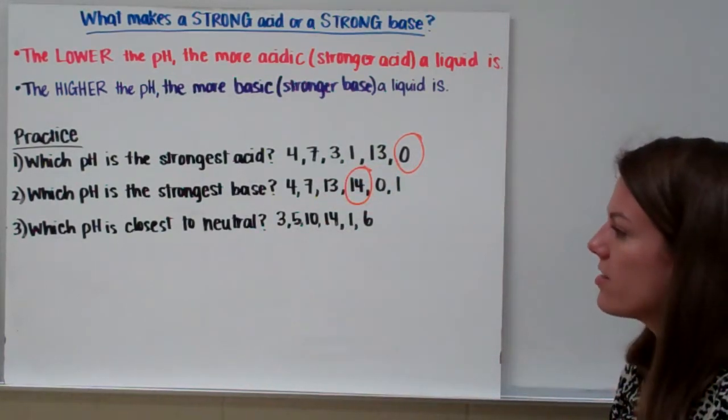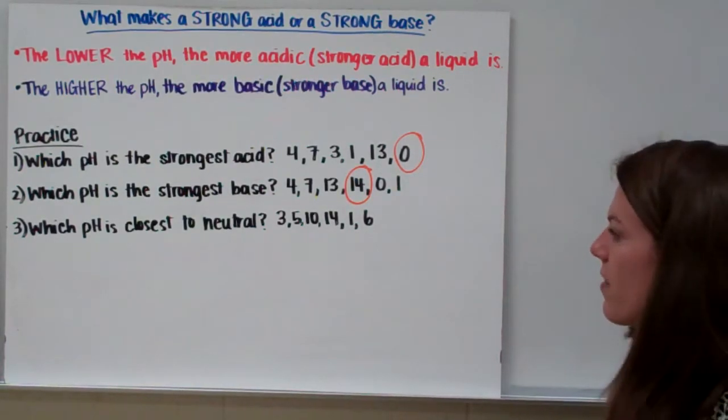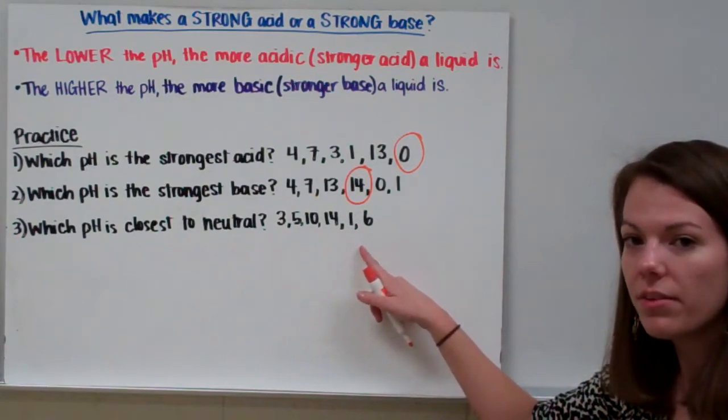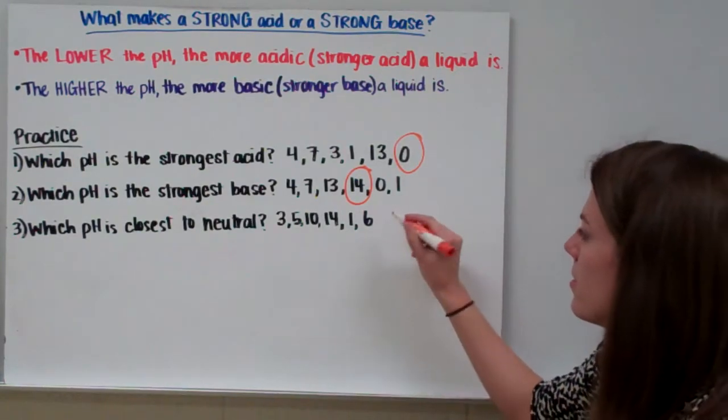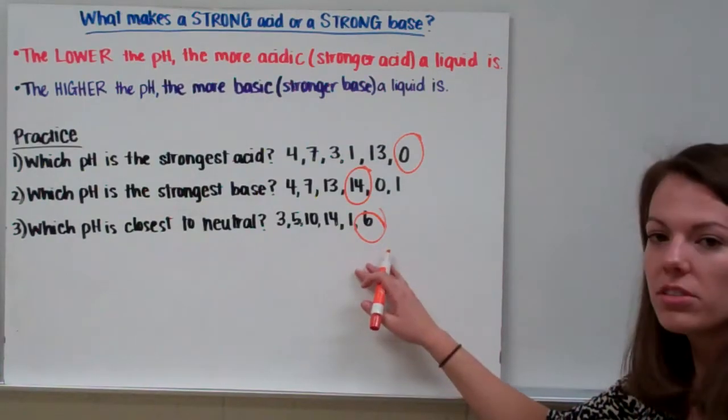The third question says, which pH is closest to neutral? Okay, remember, neutral is 7. They didn't give us 7 as an option, so which number is closest to 7? And that would be 6. So 6 would be closest to neutral out of the options they gave us.